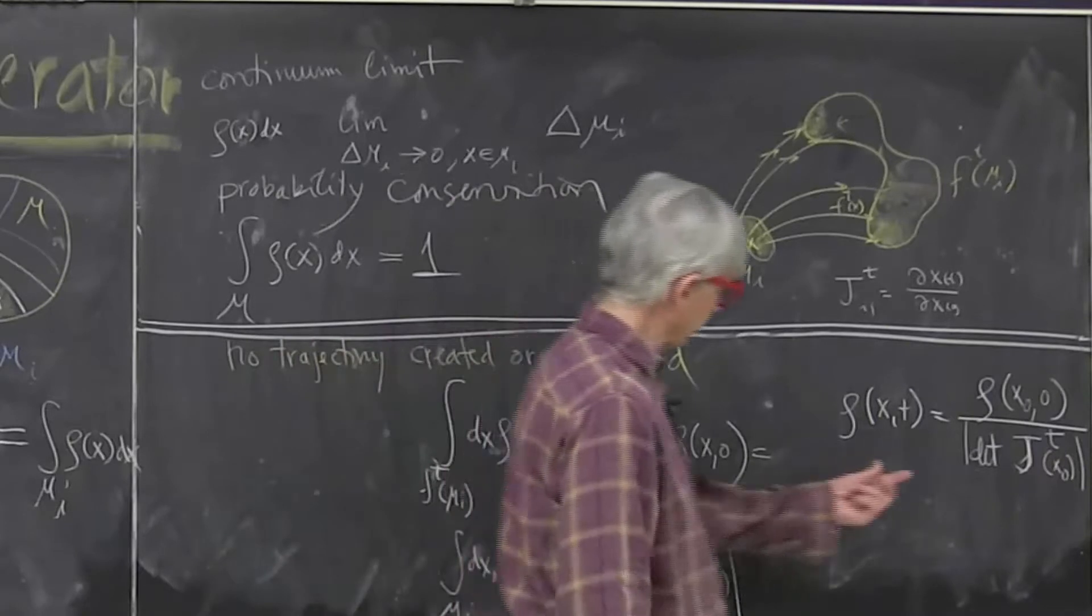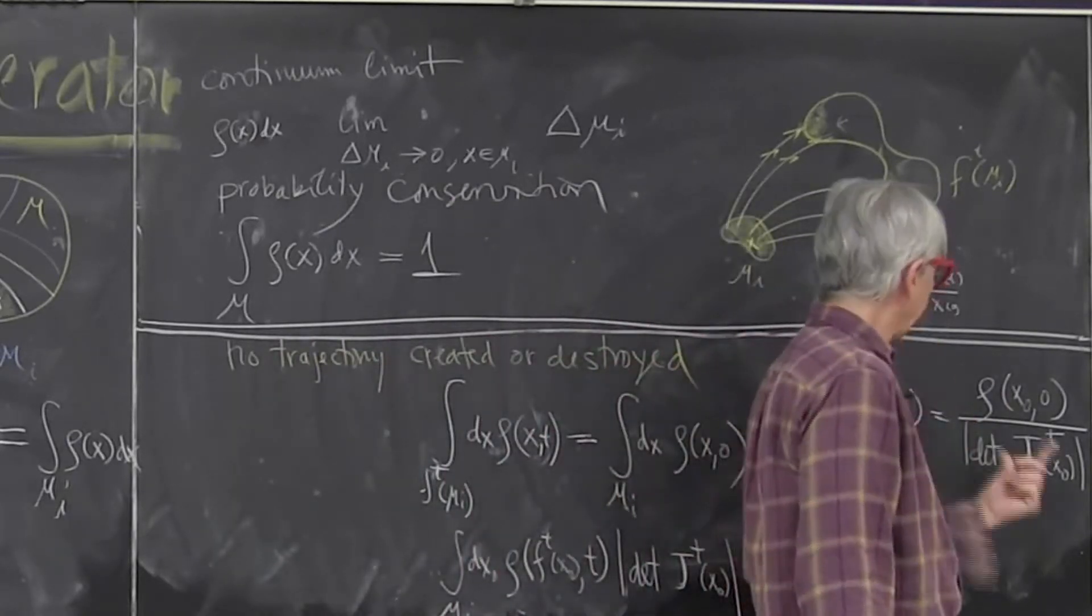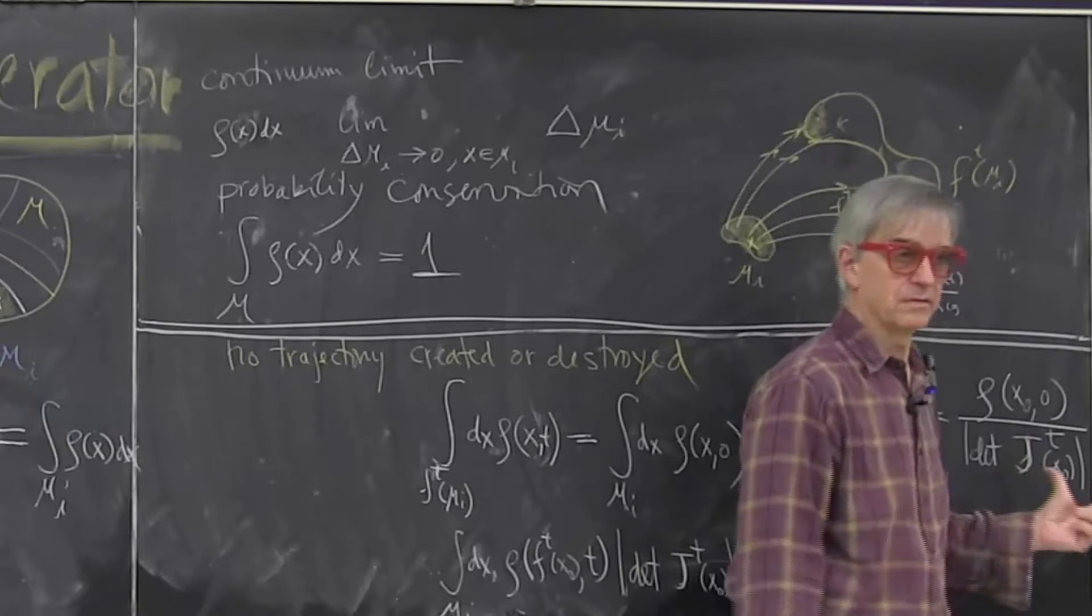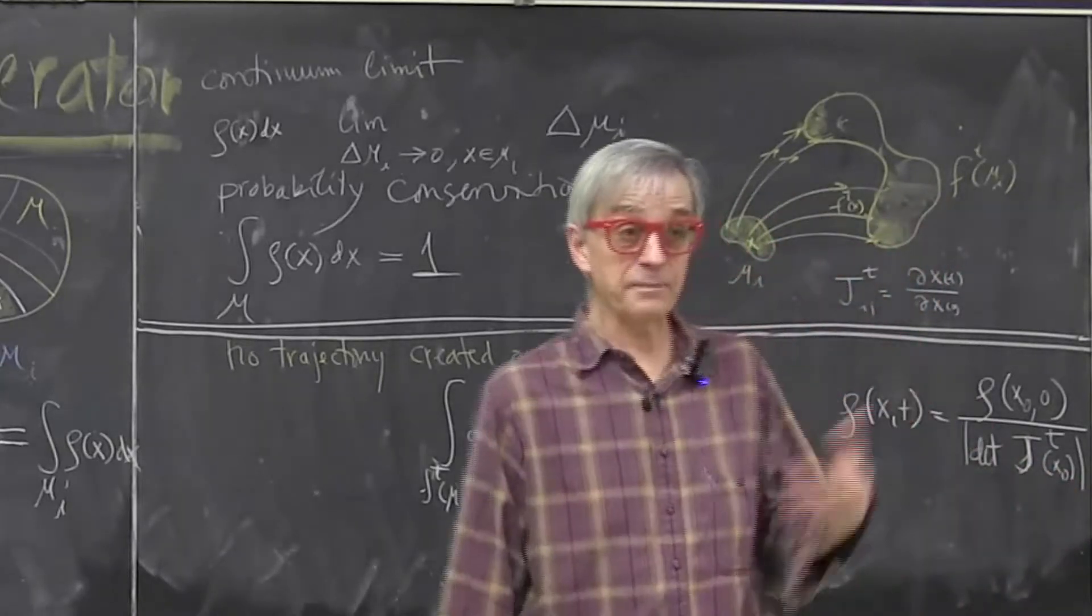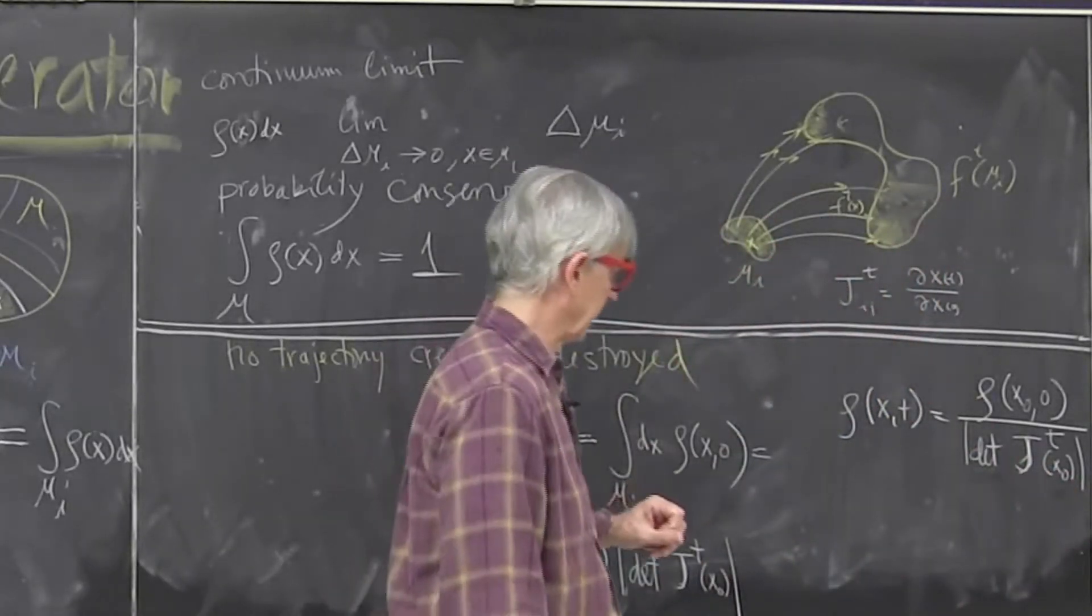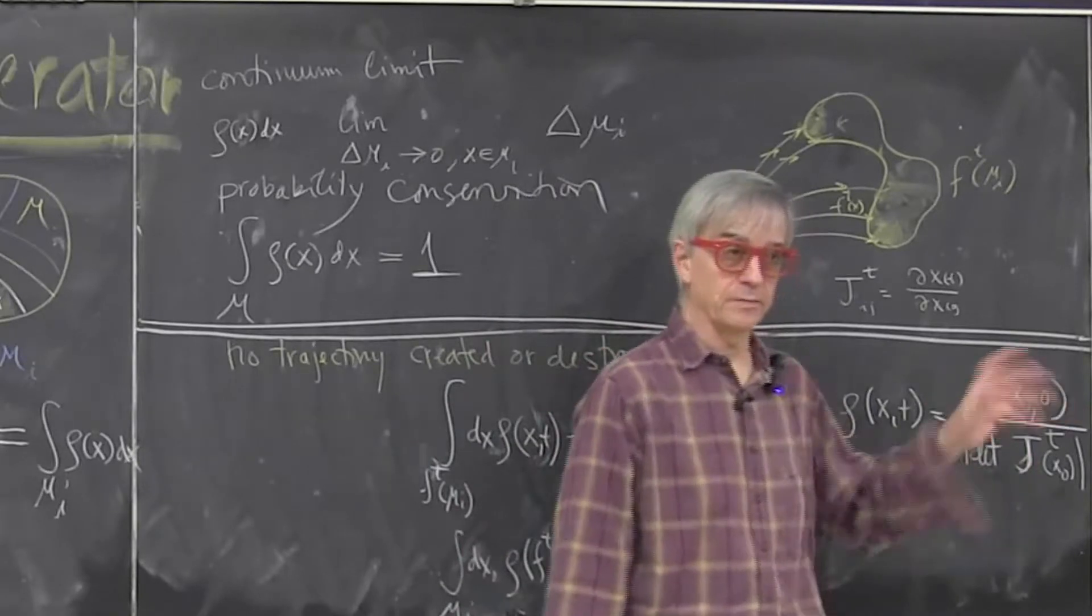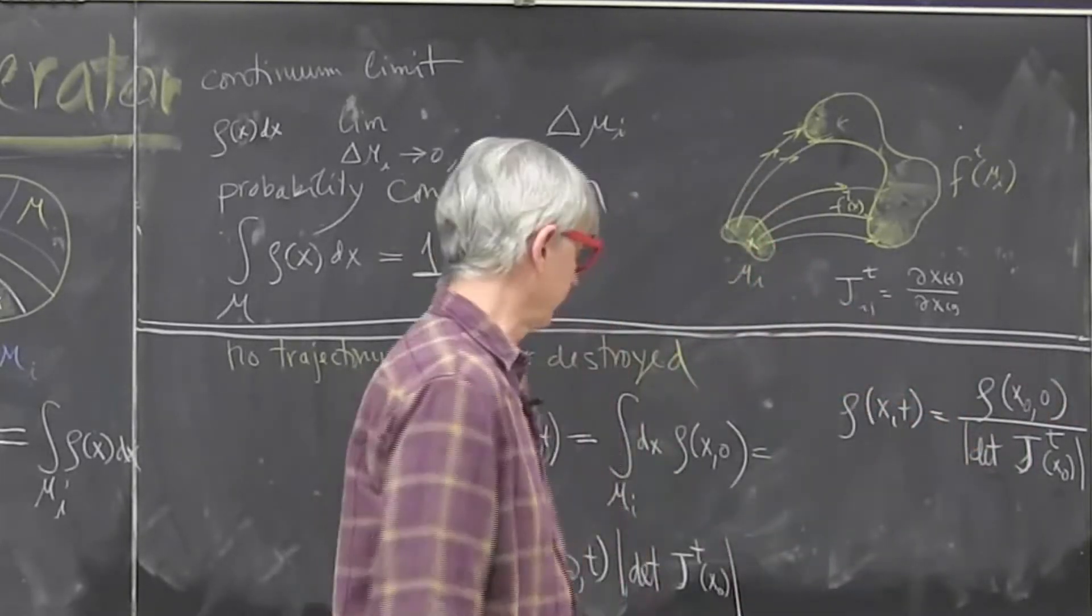Anyway, this makes sense. If Jacobian is one, density doesn't change. It happens to be, for example, Hamiltonian and symplectic flows will be that they have phase space volume preservation.